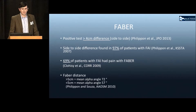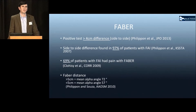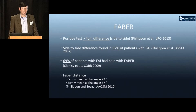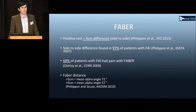Mark Philippon has defined a positive FABER test as greater than four centimeters of side-to-side difference. This side-to-side difference has been found in a high number of patients with FAI. The FABER distance has also been shown to be predictive of alpha angle.